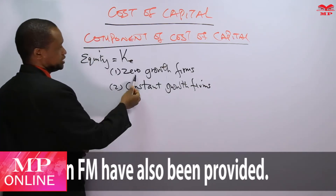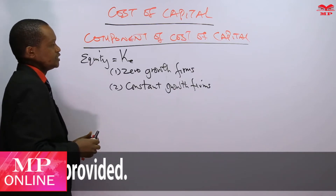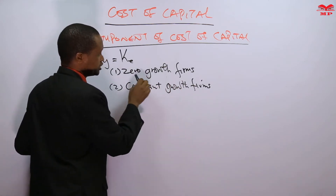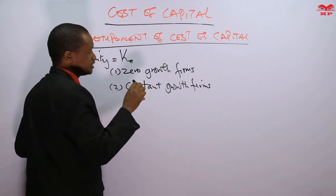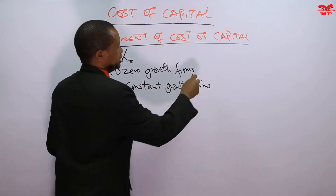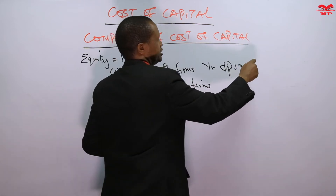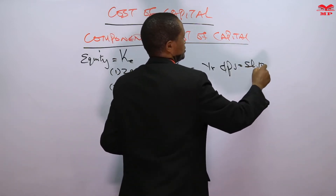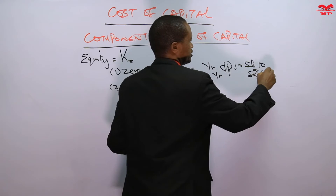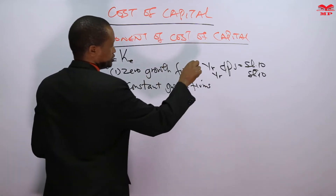As the name suggests, a zero growth firm is a firm whose dividend per share does not grow — there is zero growth. The dividend per share does not change year after year. For example, if in year one the dividend per share is 10 shillings per share, it will remain the same in year two at 10 shillings per share. There is no growth.